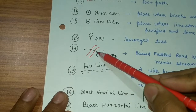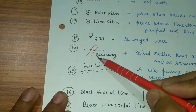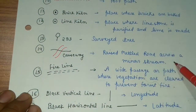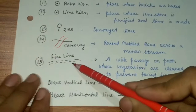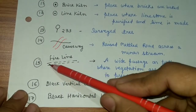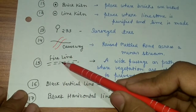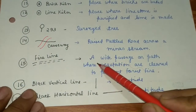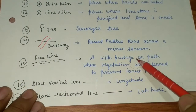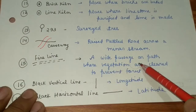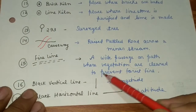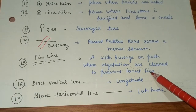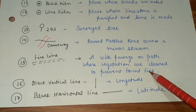Where a metal road crosses a minor stream, the symbol is called a causeway — a raised metal road across a minor stream. A fire line is a type of white passage or path where vegetation has been fully cleared to prevent forest fires.